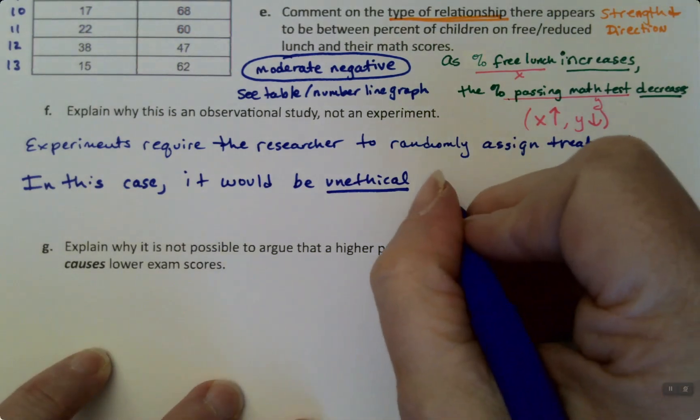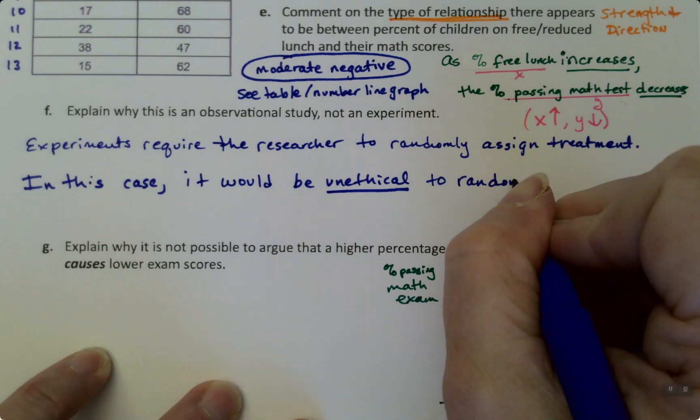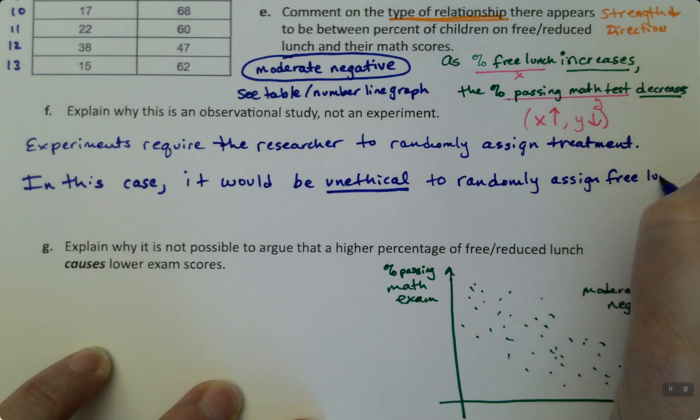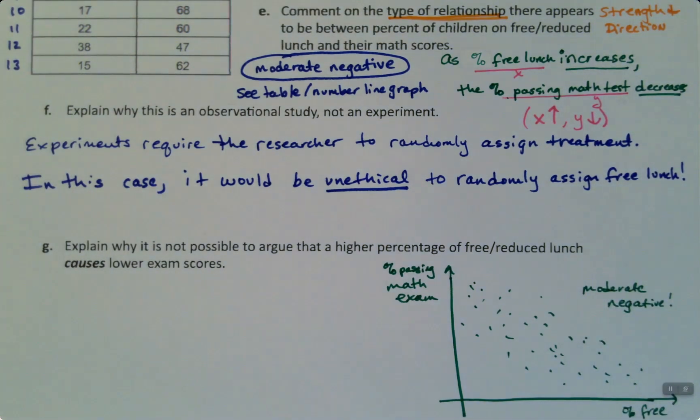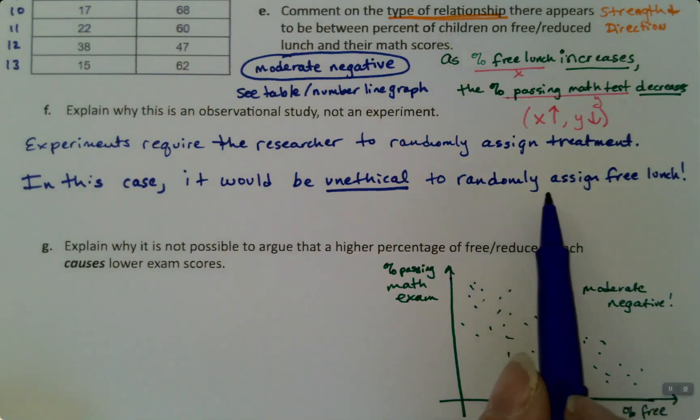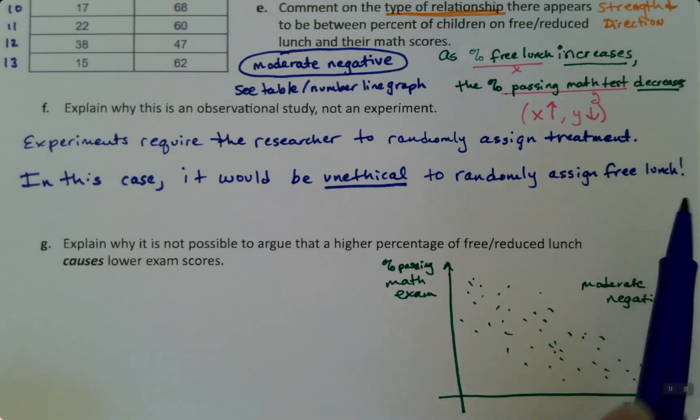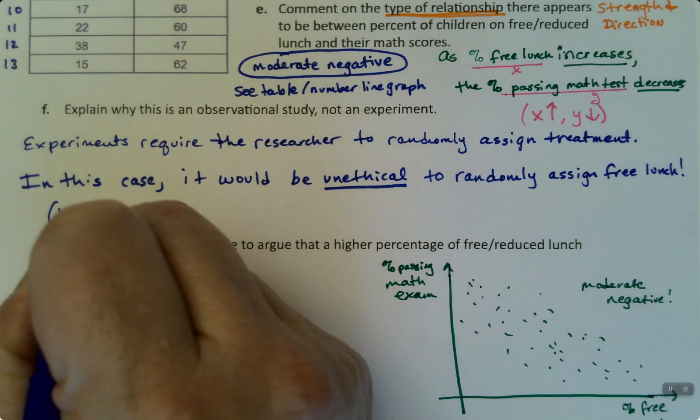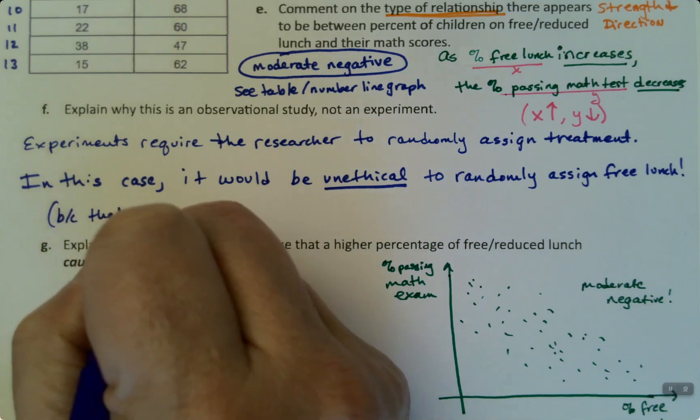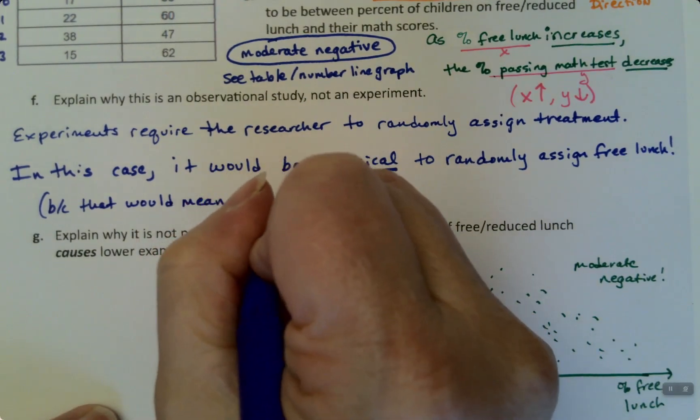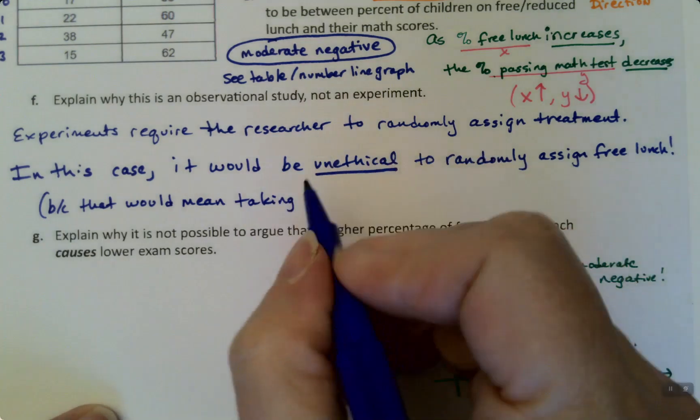Now think about why. It's not really a big deal if you just randomly give kids lunch, sure. But random assignment means you're not only assigning free lunch to some kids, but you're assigning no free lunch to other kids, and that's the problem. Because that would mean taking lunch away from poor and probably hungry children.